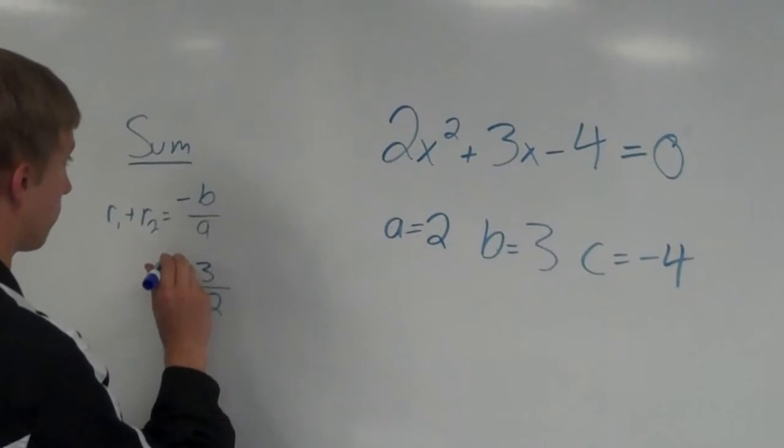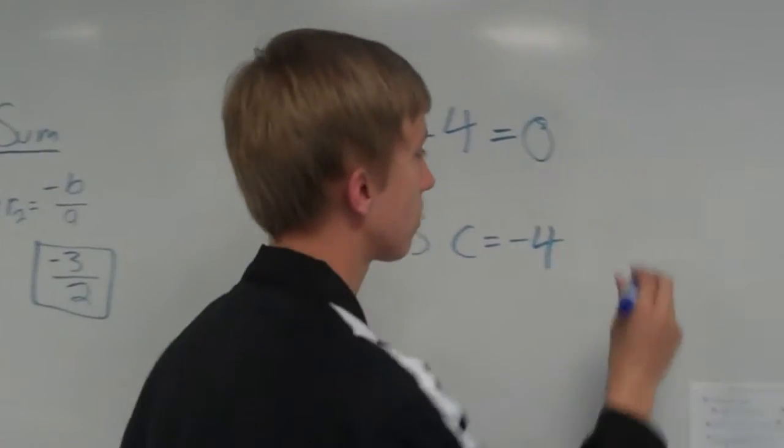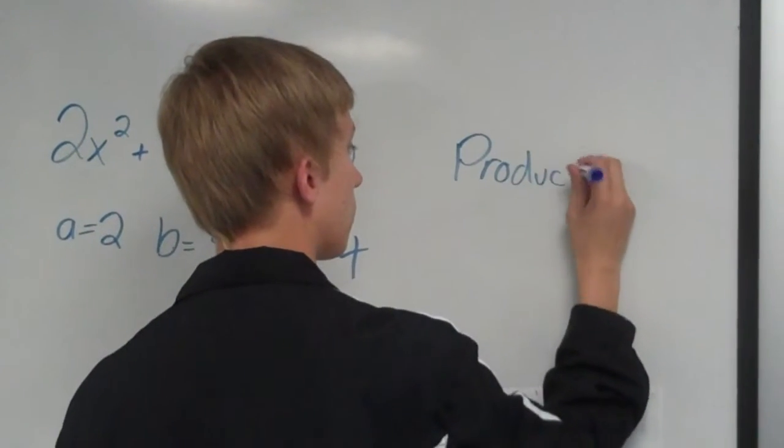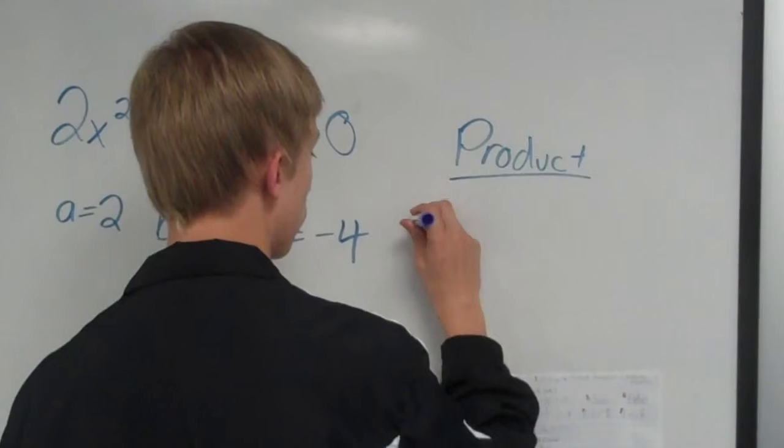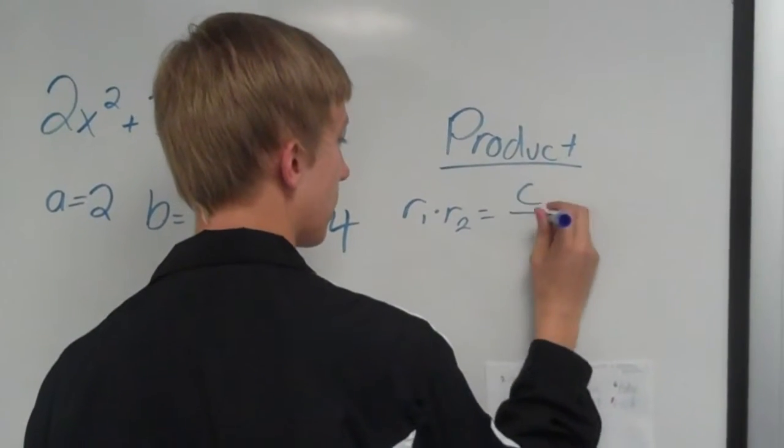which is the sum of the roots. And for the product, the equation is root 1 times root 2 equals c over a.